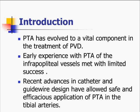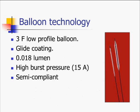The balloon technology changed from five French balloons to three French low-profile balloons. They were coated with glide coating or hydrophilic coating, and could go over 0.018 wires. They could be used at very high pressures, and were semi-compliant balloons rather than just non-compliant as before.